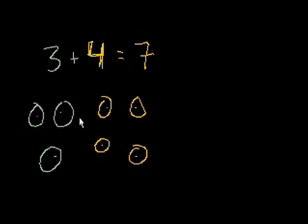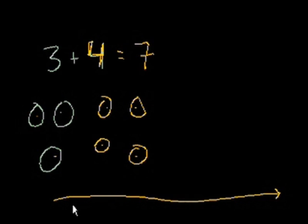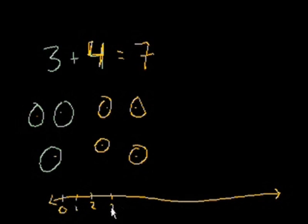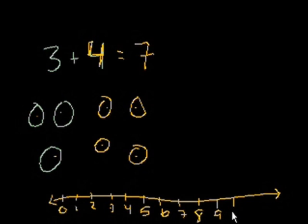Now I'm going to introduce you to another way of thinking about this — it's called the number line. This is how I do it in my head when I forget, if I don't have it memorized. On the number line, I just write all the numbers in order, going high enough so all the numbers I'm using are in it. The first number is 0, which is nothing, and then you go 1, 2, 3, 4, 5, 6, 7, 8, 9, 10, 11, and it keeps going.